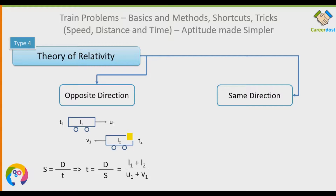Why do we add the speeds for opposite direction? When you're in a train and you see an oncoming train, it appears to move much faster. For example, if your train is at 80 km/h and the other is at 40 km/h, the oncoming train feels like it's at 120 km/h — because both speeds add up. That is why we add the speeds for trains moving in opposite directions.